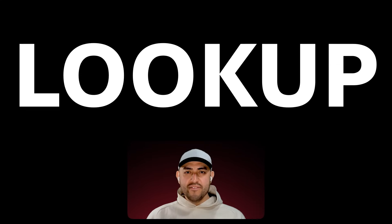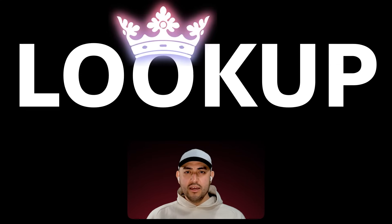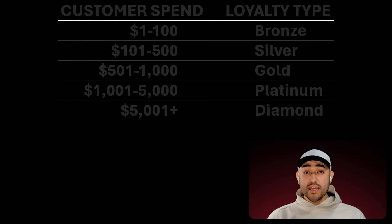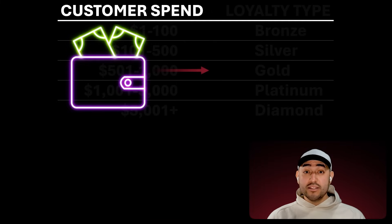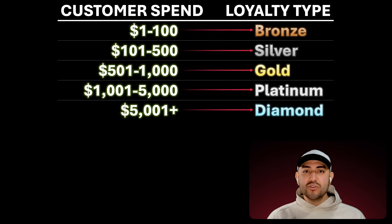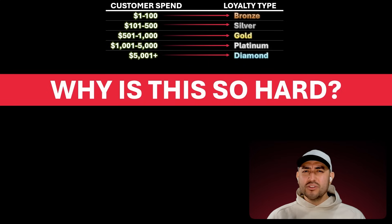Long live the king of categorizing numbers. And in this arena, the lookup function reigns supreme. Here's the thing: categorizing numbers, like customer spend into a loyalty type, is an essential data task. Yet for being so important, why does this feel so hard to do in Excel?